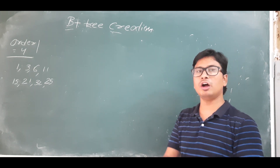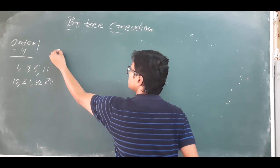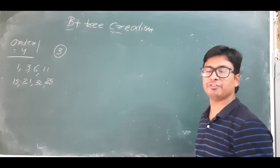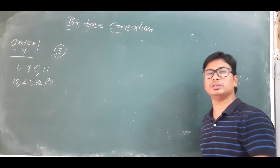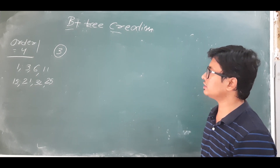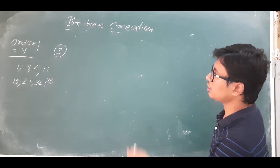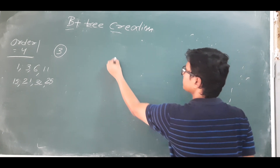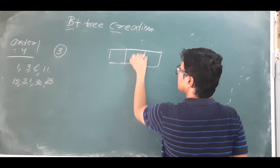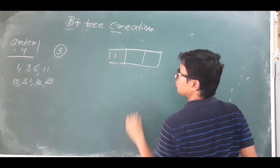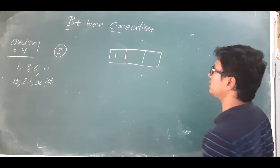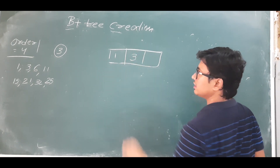If order is equal to 4, p minus 1 gives three elements maximum I can keep. If I am inserting more than three elements then I will get an overflow condition. Now I want to insert 1 — no problem. Then I will insert 3 — also no problem.